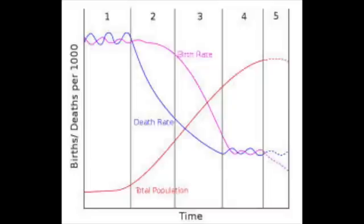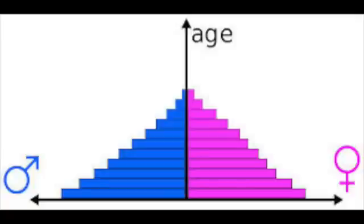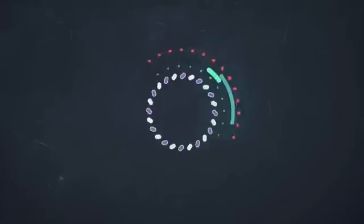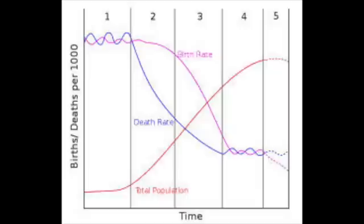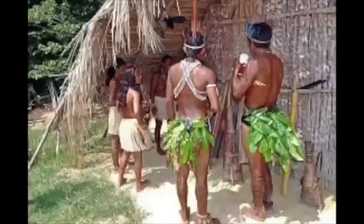Hi guys, this is I'm Stuck and today we're looking at the Demographic Transition Model and Population Pyramids. A Demographic Transition Model is basically a model that shows how birth rates and death rates can change a country through stages of development.